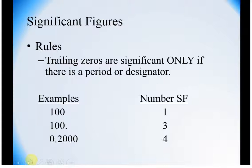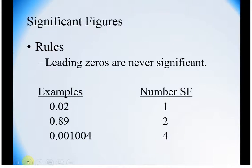Trailing zeros are only significant if there is a period. 100 has one sig fig. This decimal after the 100 makes all of those trailing zeros significant, so this has three. Leading zeros are zeros that are before a non-zero number in a number that is less than one. These are never significant. They are placeholders. 0.02 has one sig fig, 0.89 has two.